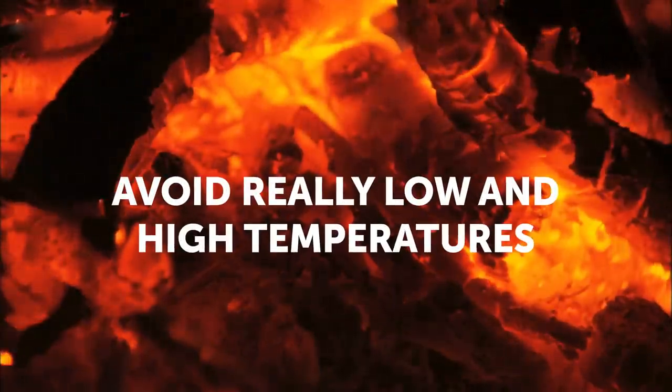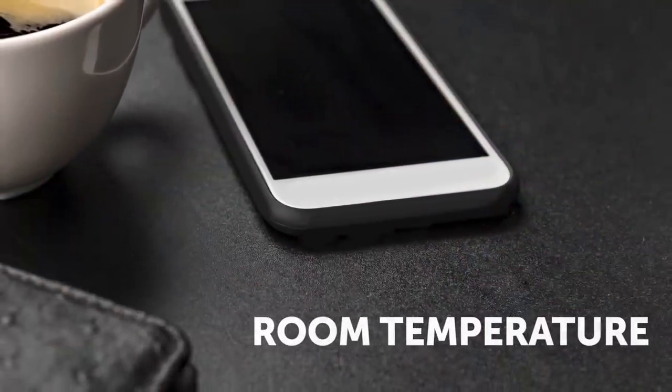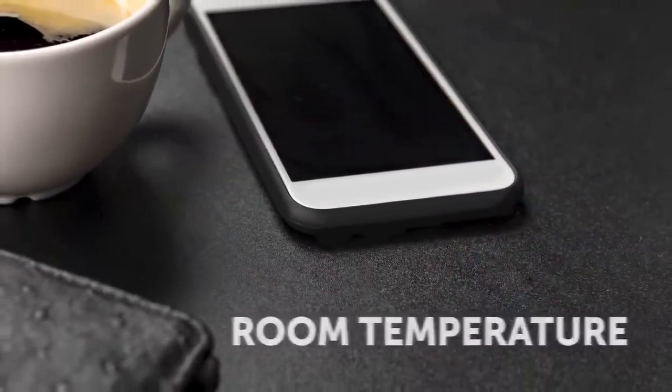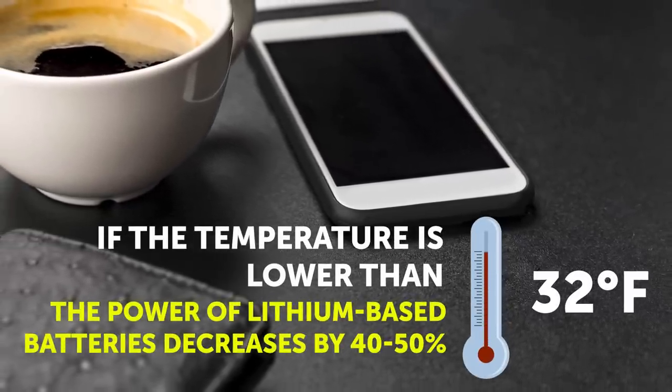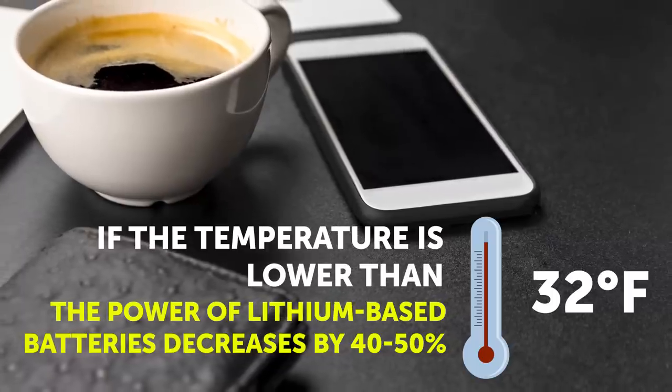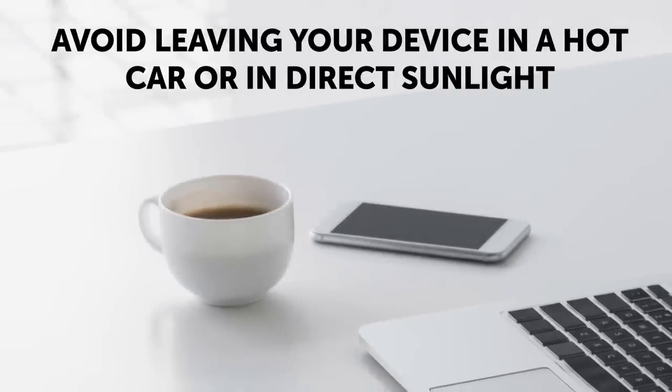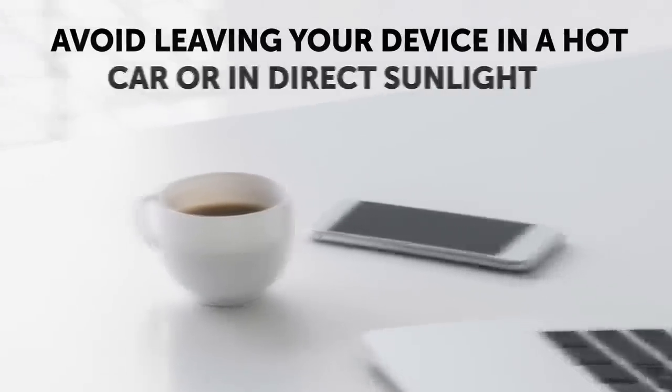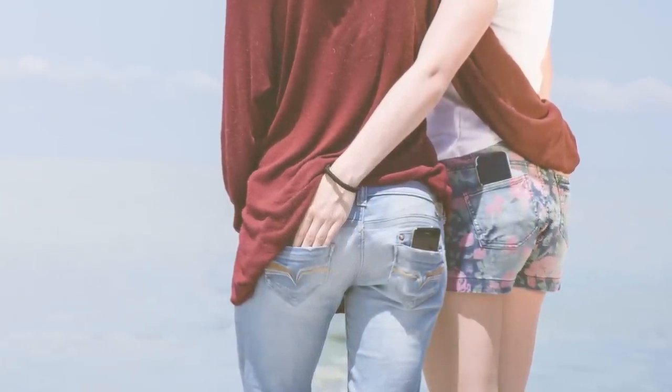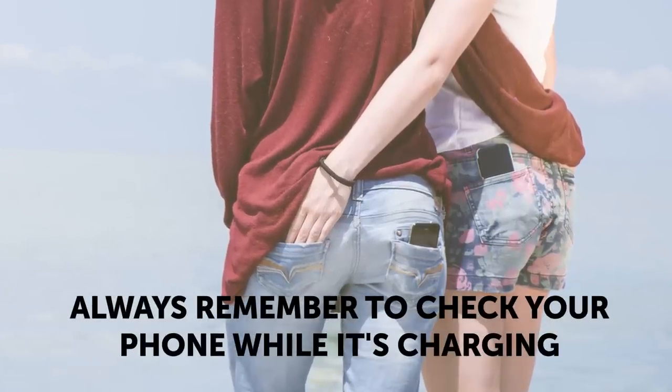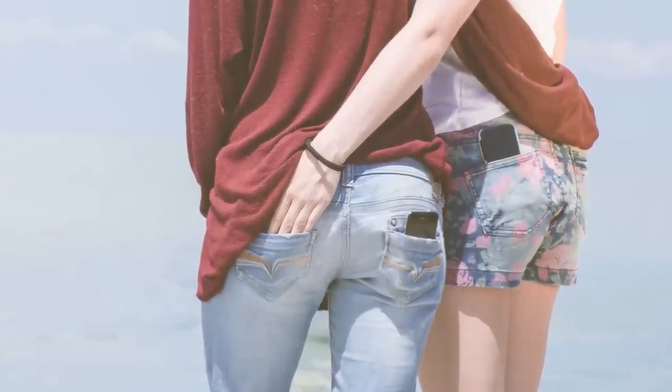Avoid really low and high temperatures. The most comfortable condition for cell phones and their batteries is room temperature. If the temperature is lower than 32 degrees Fahrenheit, the power of lithium-based batteries decreases by 40 to 50 percent. And really hot temperatures won't do either. So avoid leaving your device in a hot car or in direct sunlight, and don't keep your phone in your pocket because your body heat will actually make it hot too. Always remember to check your phone while it's charging. If it gets too hot, there may be some problems with your charger.